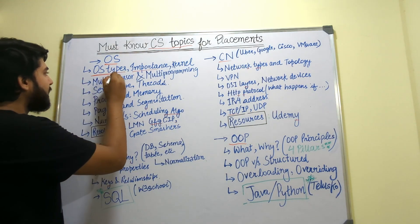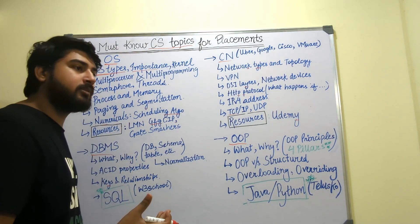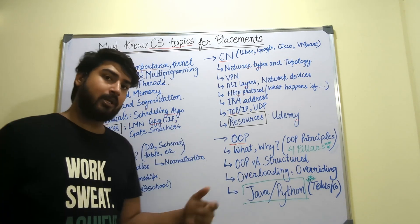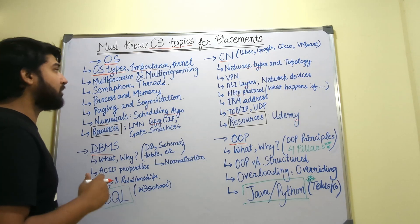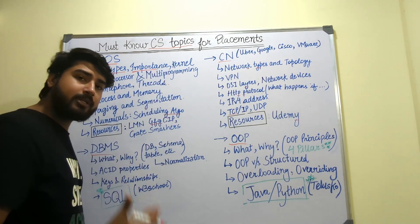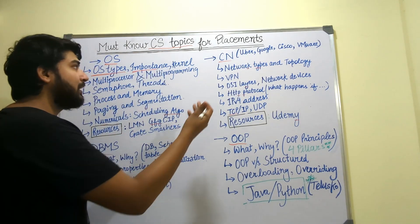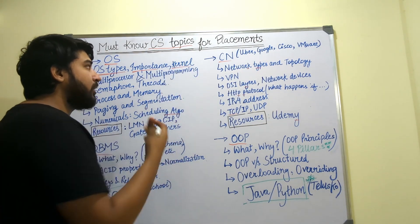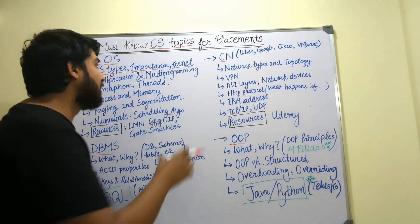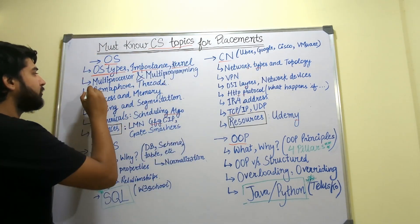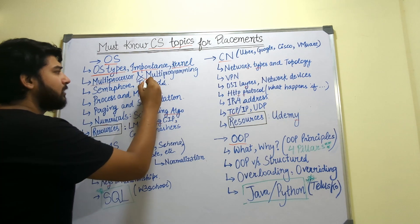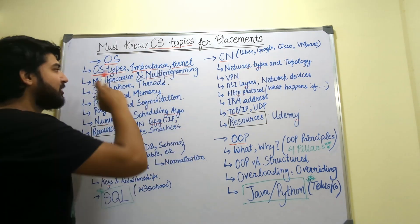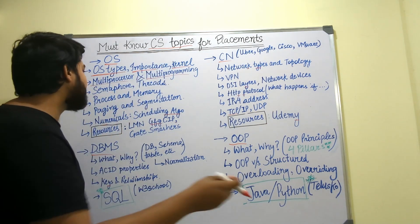The first OS topics are the types of operating systems — the what and the why. What is an operating system, why is it important, what are its uses? You need to know the importance and components of an operating system, for example, kernel — you might have heard that kernel is the heart of the operating system. Apart from that, you need to know multiprocessing and multiprogramming. These are two terms I was very confused about in college, so make sure you're not confused between the two.